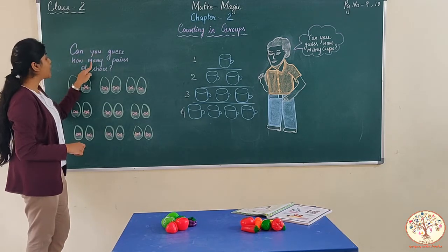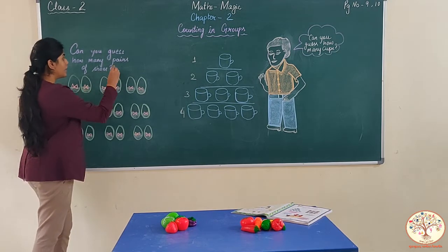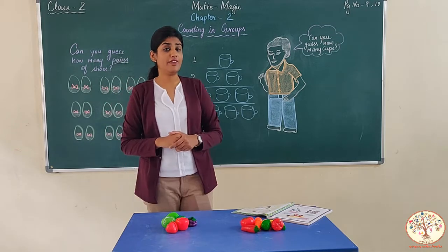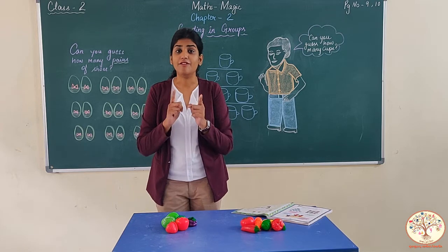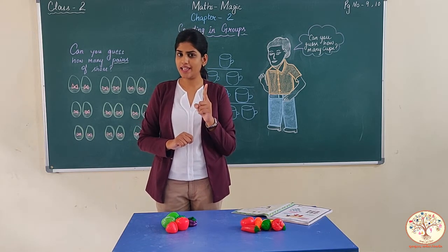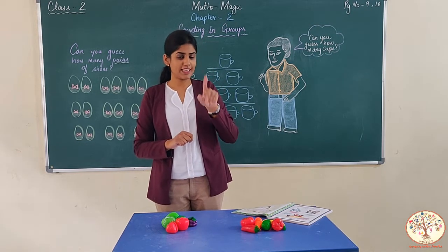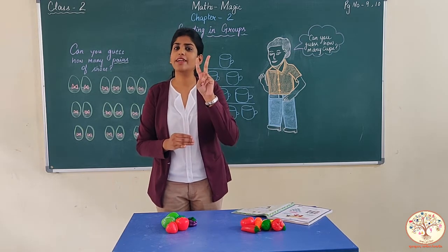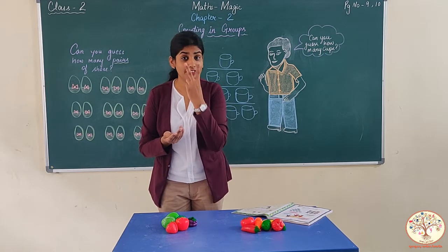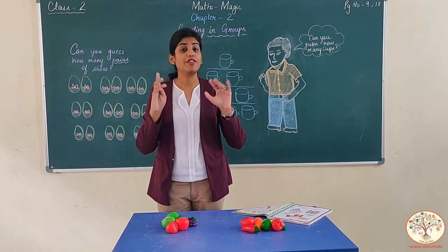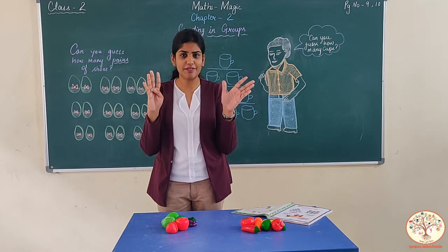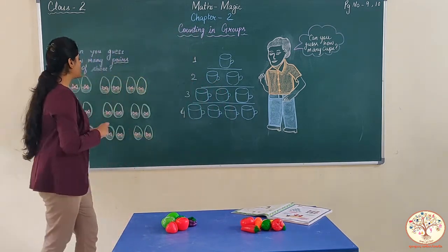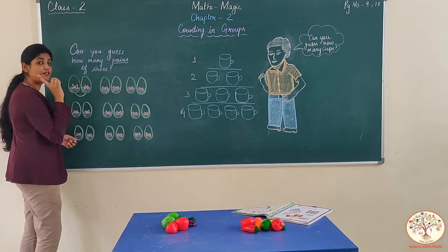Can you guess how many pairs of shoes are given here? Do you know what a pair is? Let me tell you — pair means when two things are of the same type. Have you purchased shoes? We have a pair of eyes, a pair of ears. When you buy gloves, we call them a pair. So that is a pair: two things of the same type. Jab two things ek saath hote hain, we call them a pair.